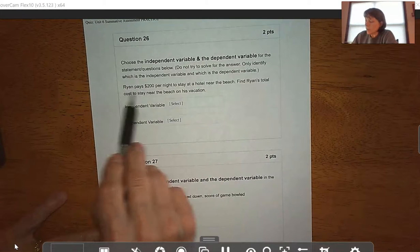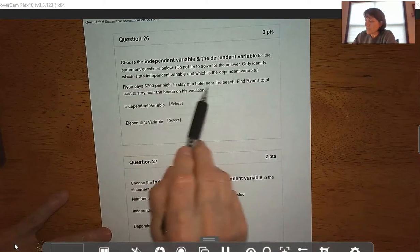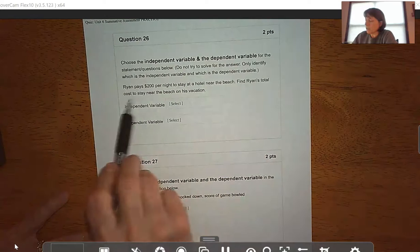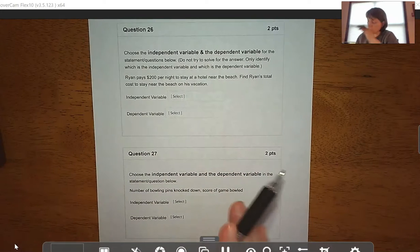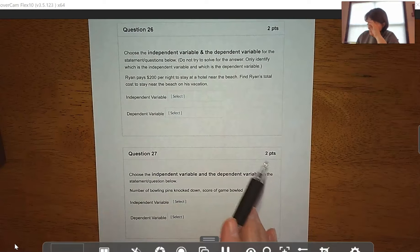Alright, so here we go. Ryan pays $200 per night to stay at a hotel near the beach. Find Ryan's total cost to stay near the beach on his vacation. Again, we're not solving, we're just choosing the independent variable and the dependent variable.